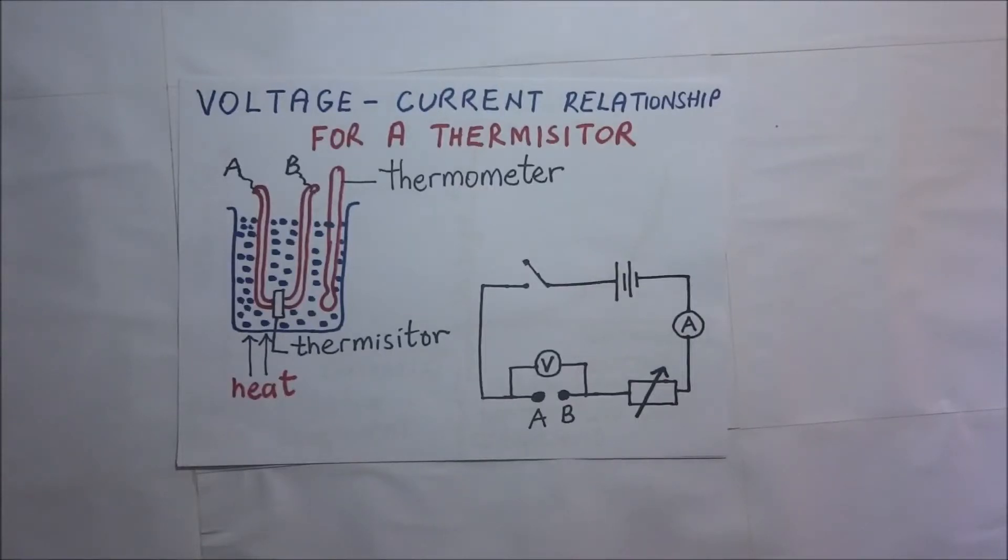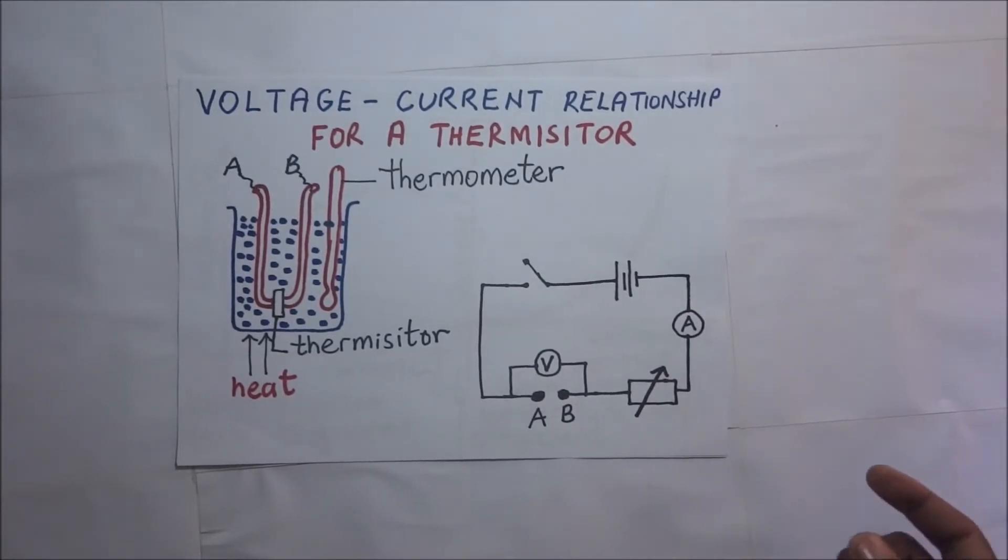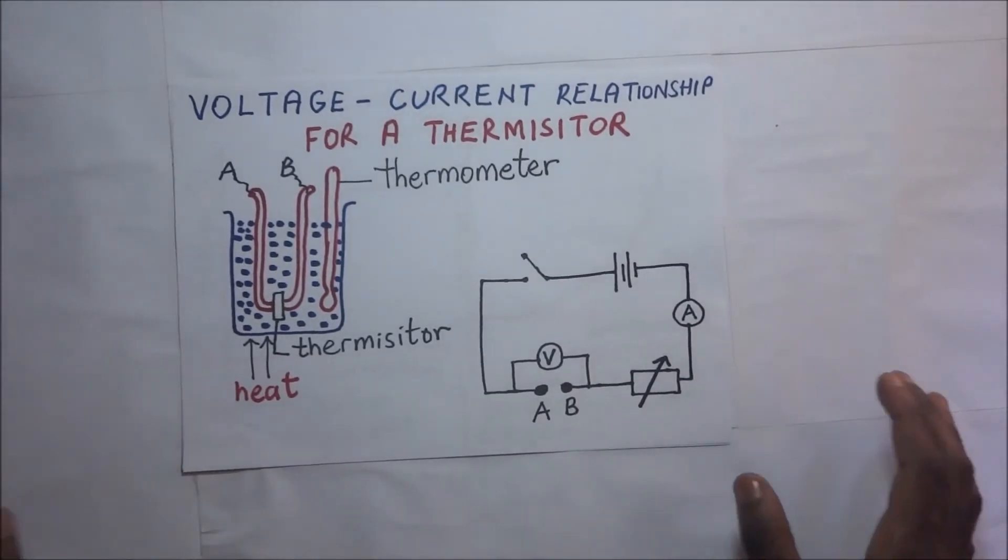A thermistor is a component whose resistance changes with temperature. There are two types of thermistors: those whose resistance increases with increasing temperature, and those that behave like metals.